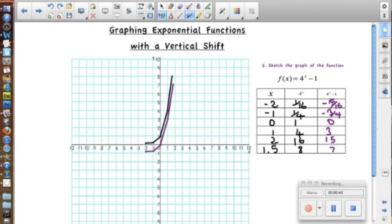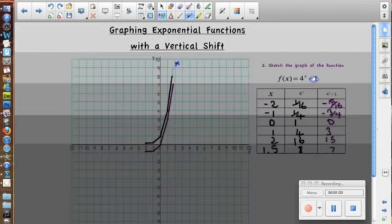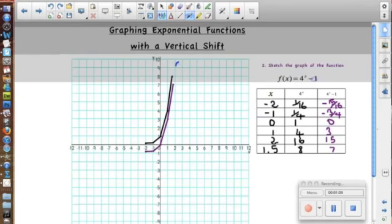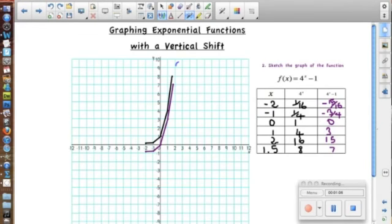And it should look a little like this, like this graph, the purple graph right here. Notice the black graph is 4 to the x, and we took that graph and we moved everything down one place. Because of that minus 1, we moved everything down one place. So, then we got the graph right here of f of x equals 4 to the x minus 1.